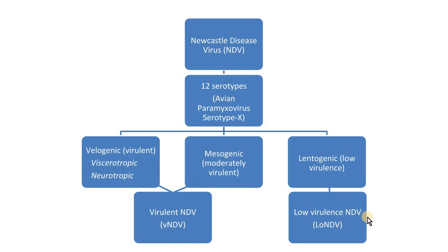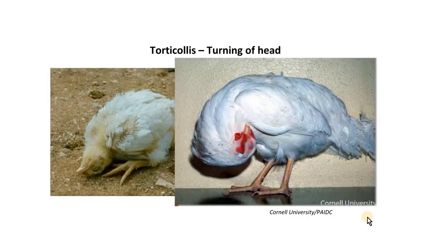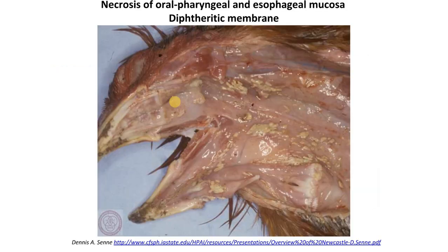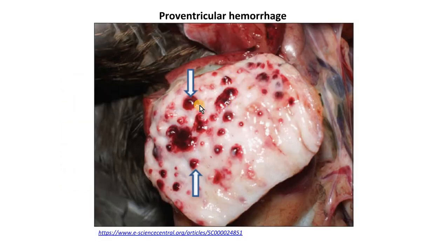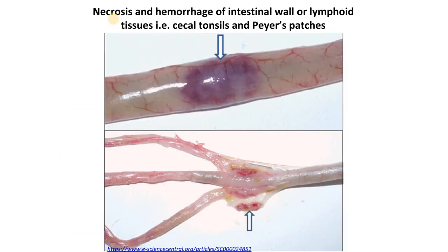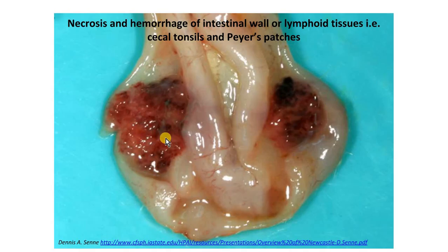The virus can be transmitted by aerosols, nasal secretions, and feces from infected animals. Newcastle disease virus can affect several organs, which results in diverse clinical signs and gross findings at necropsy. In this example we can see torticollis — turning of the head — caused by Newcastle disease, conjunctival hemorrhage, edema of the head, necrosis of the oropharyngeal and esophageal mucosa with the formation of a diphtheric membrane, and proventricular hemorrhage with multifocal areas of hemorrhage. There is also necrosis and hemorrhage in the intestinal wall and lymphoid tissues such as cecal tonsils, and birds will typically present with green diarrhea.